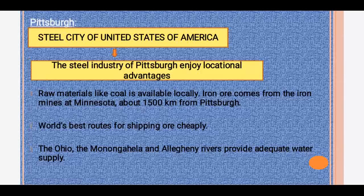Now let's learn about the important steel city of the USA: Pittsburgh. It is an important steel city of the United States of America. It enjoys favourable geographical conditions — coal is available locally, and iron ore comes from the iron mines at Minnesota, about 1500 km from Pittsburgh. The famous Great Lakes waterway provides one of the best routes for shipping between Minnesota and Pittsburgh, and the Ohio, Monongahela, and Allegheny rivers provide adequate water supply.